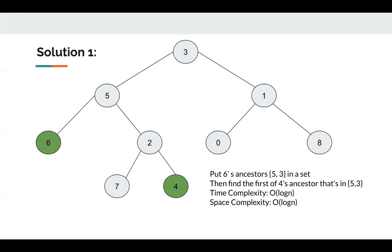For this problem, we can come up with a solution very quickly. For example, let's say we need to find the lowest common ancestor of 6 and 4. So let's start with 6 first. We can put 6 and all its ancestors into a hash set. Then we can start with another node 4.